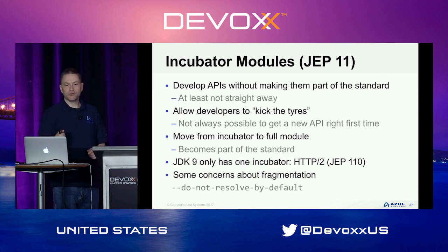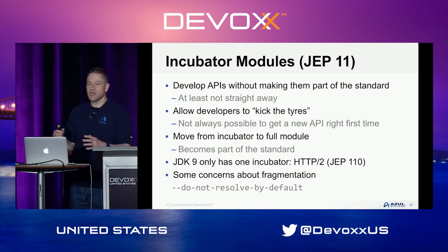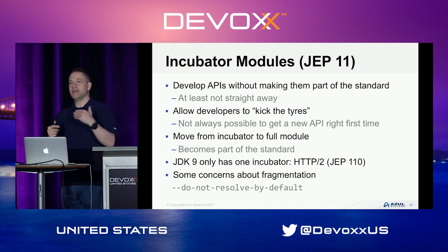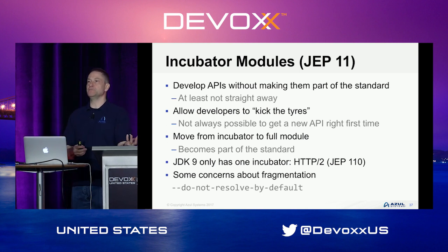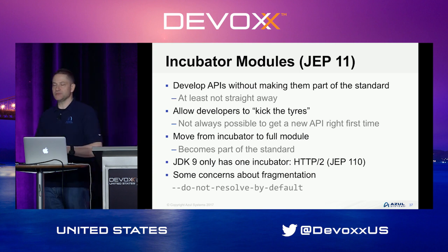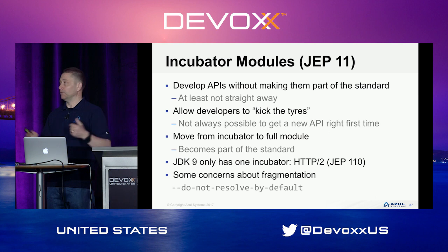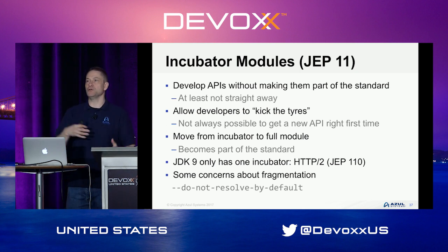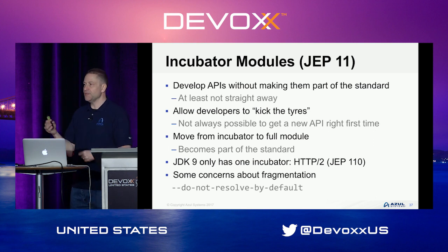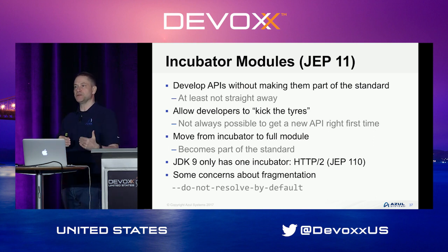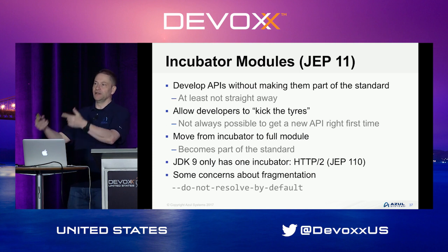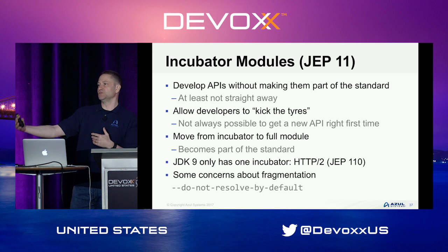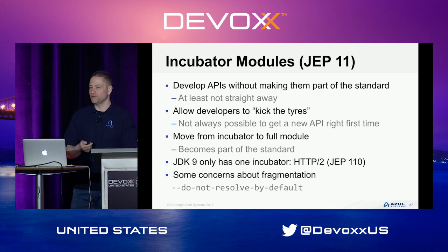Incubator modules allow development of new APIs so developers can test them before they become part of the standard. For example, the HTTP/2 client API is an incubator module — you can use it, test it, and give feedback to Oracle and the OpenJDK team. If changes are needed, they can be made before it becomes standard, rather than deprecating things after the fact.